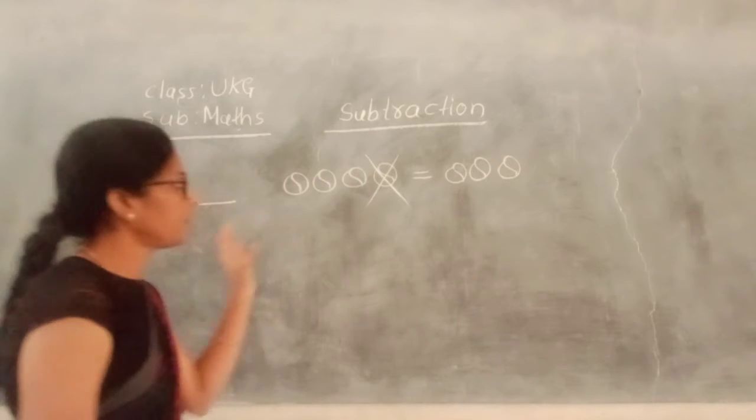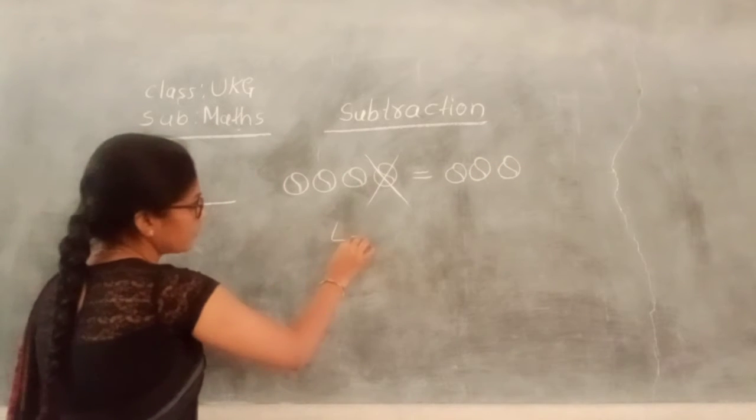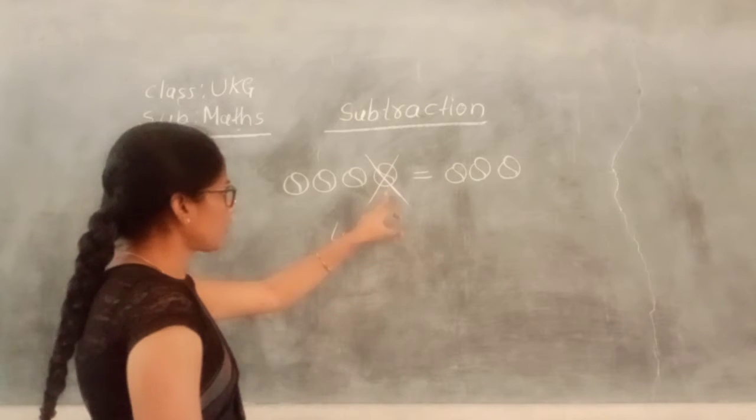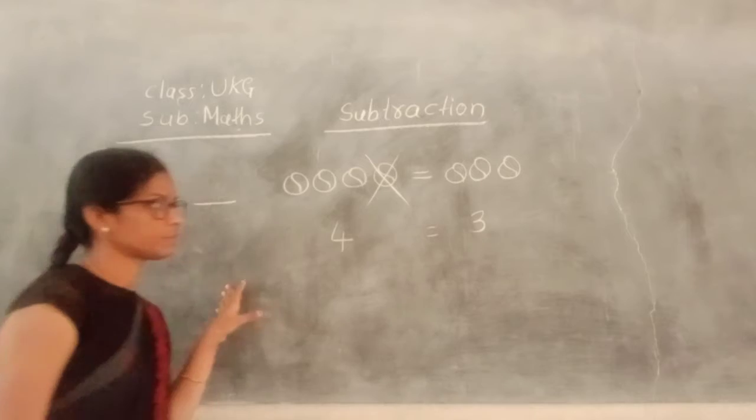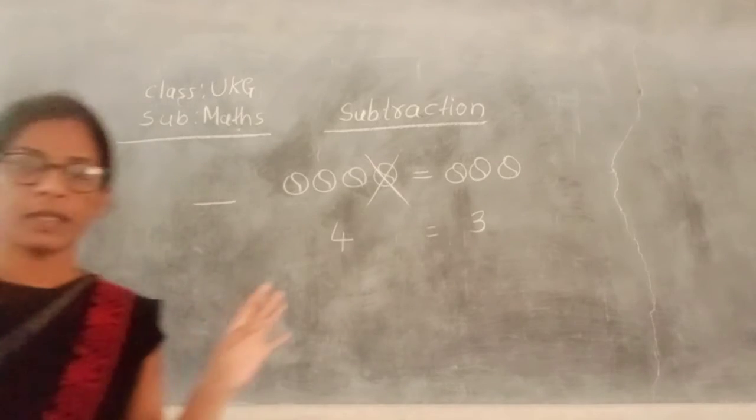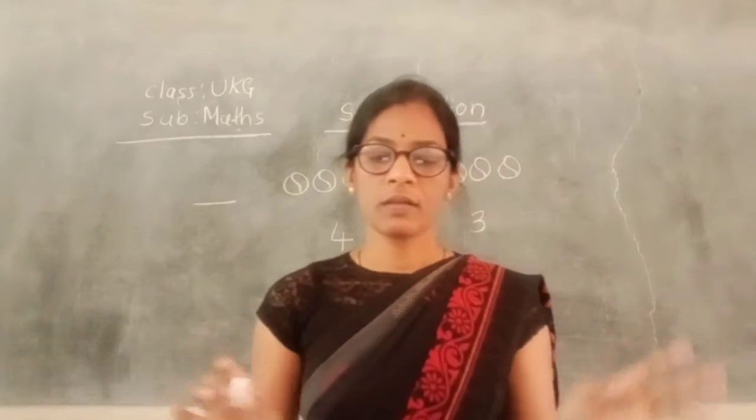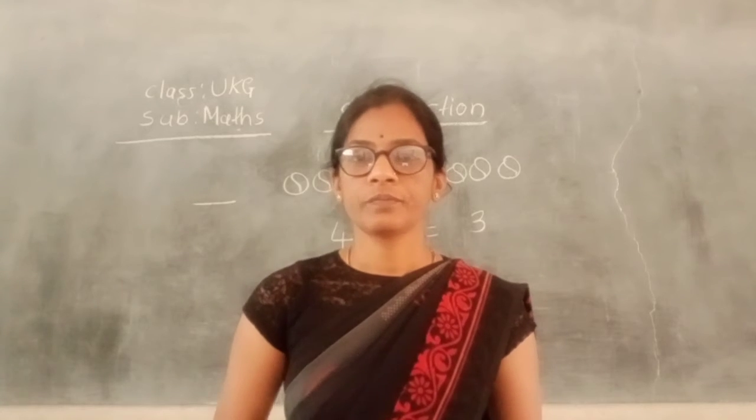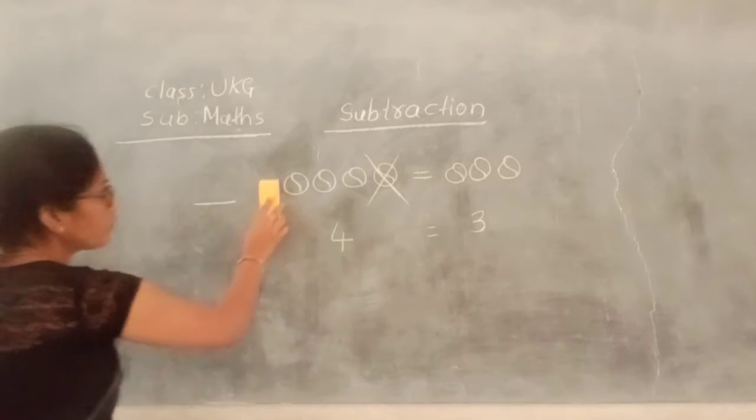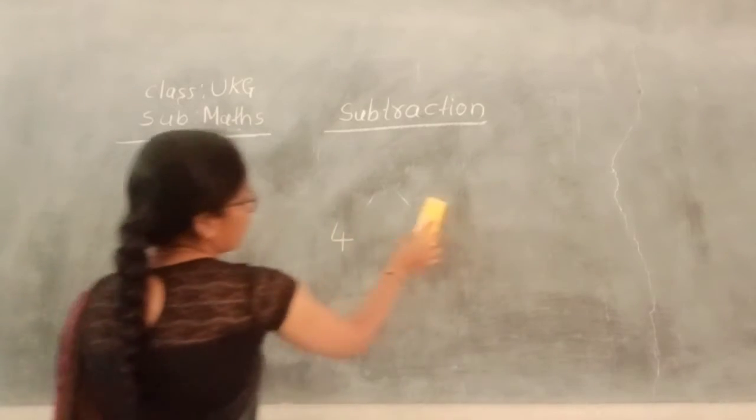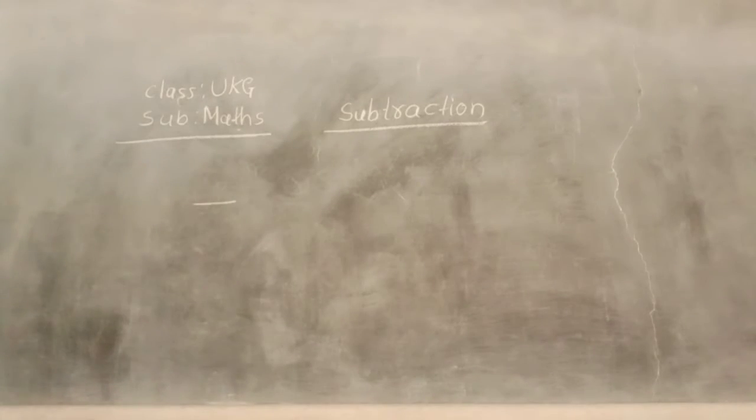The first one is to cross one circle here. Clear it. The concept was clear. Next, I will give some problems here. Number one. Look at here.